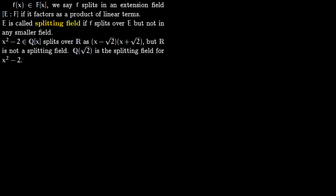Let us now talk about splitting fields. Say you're given a polynomial F; we say this polynomial F splits in an extension field E over field F if it factors as a product of linear terms — so you only have linear terms. E is called a splitting field if F splits over E but not in any smaller field. So E is the most economical field.